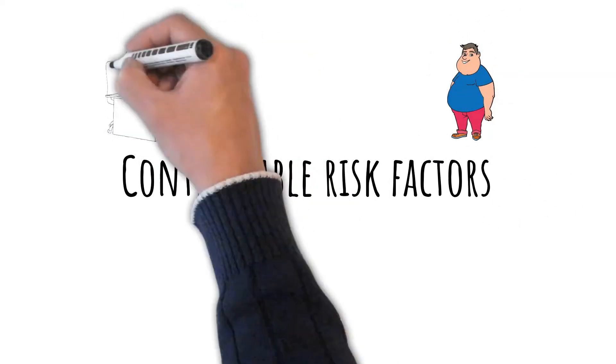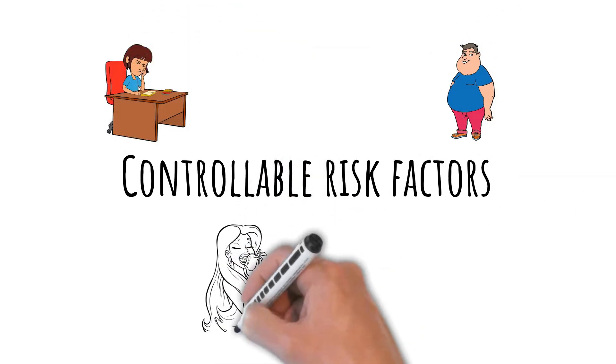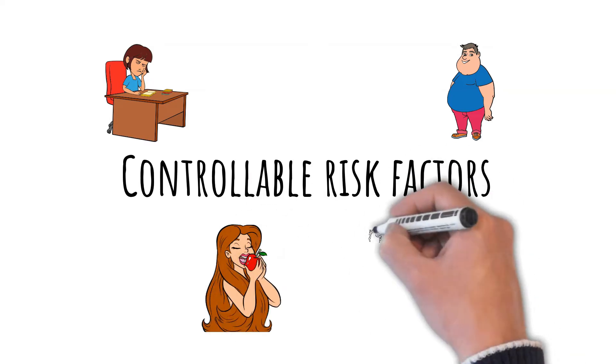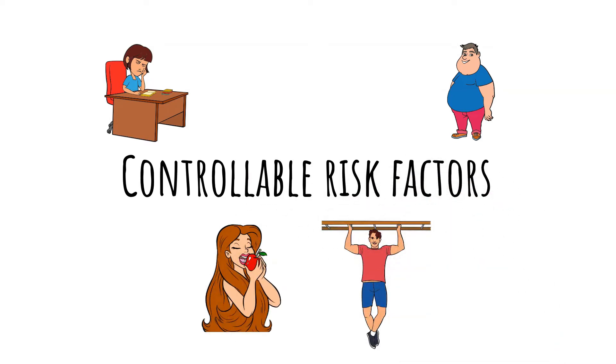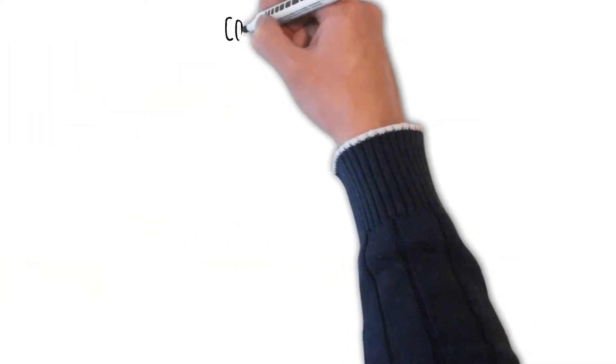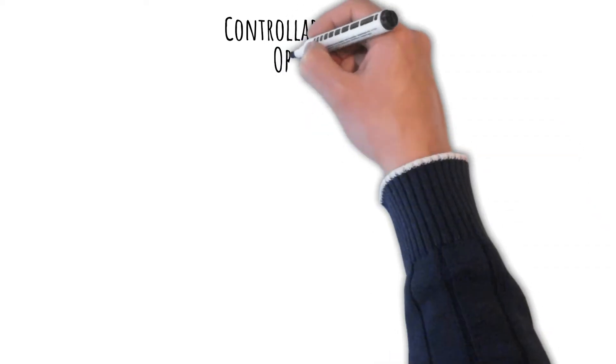Now let's explore the controllable risk factors for diabetes. They are our focus, because we can decrease or eliminate some of these risks by adopting some simple, healthier lifestyle changes.